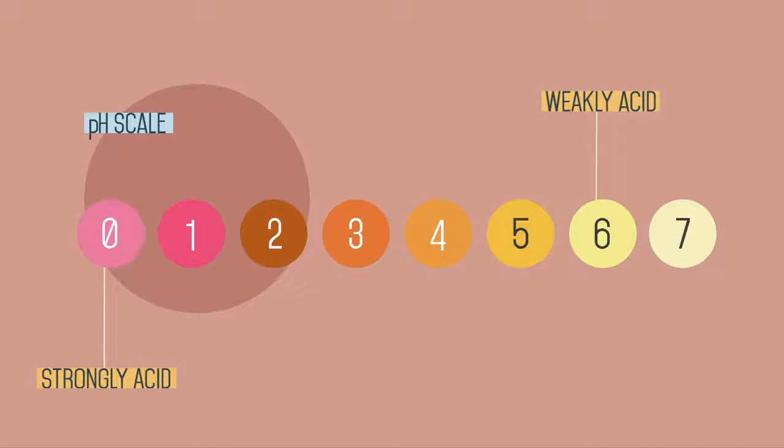Acids can be identified by using full range indicator from 0 to 7 on the pH scale. pH is a measure of the concentration of hydrogen ions.